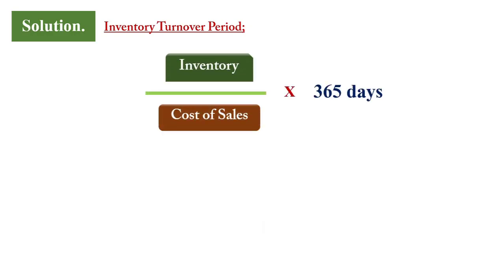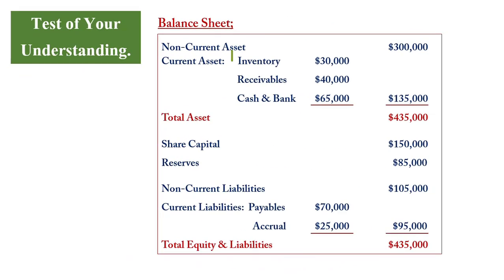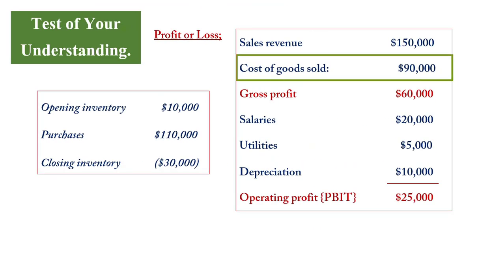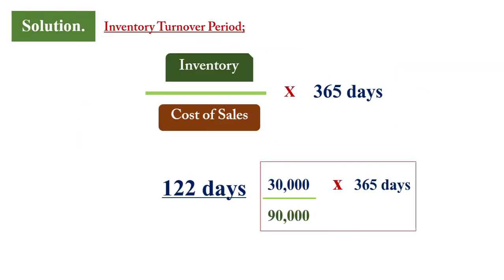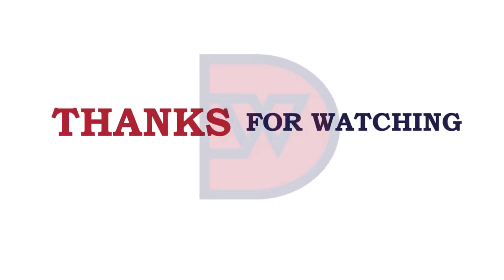The last ratio is the inventory turnover period. The formula is inventory divided by cost of sales, multiplied by 365 days. This gives: inventory of $30,000 divided by cost of sales of $90,000, multiplied by 365 days.